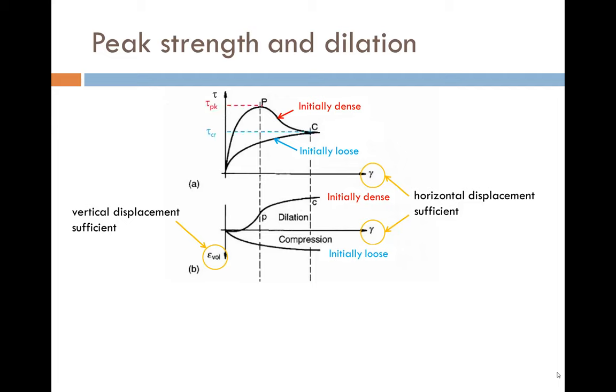The peak strength for the dense soil in the upper plot, point P, corresponds to the point at which the rate of dilation is at its maximum in the lower plot. With further strain, the dilation effect reduces and an ultimate or critical state shear strength is reached, point C. Loose soils do not have peak strength but reach the same critical state shear strength. Once the critical state is reached, no further volume change occurs.